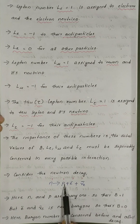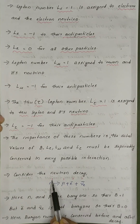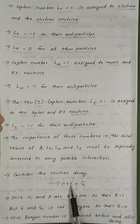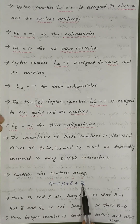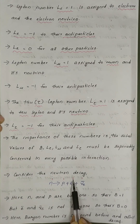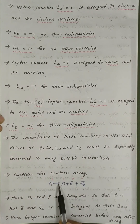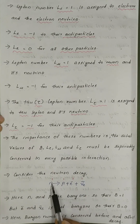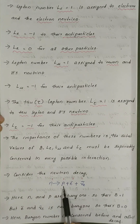The neutron and proton are Baryons, so their Baryon number is 1. The electron and the anti-electron neutrino are not Baryons, so their Baryon number is 0. Therefore, on the left side B equals 1, and on the right side B equals 1 plus 0 plus 0, which equals 1. The Baryon number is conserved before and after decay.